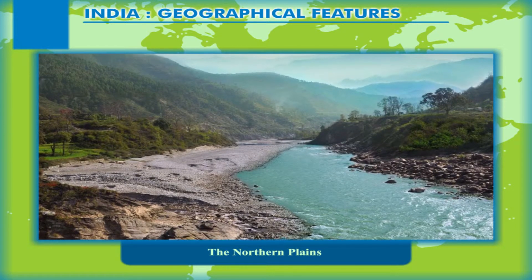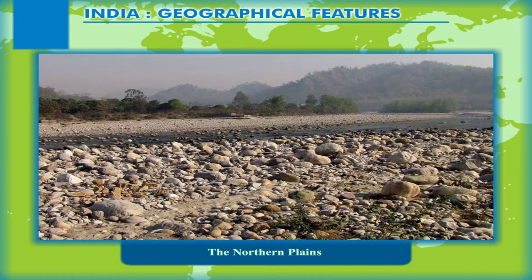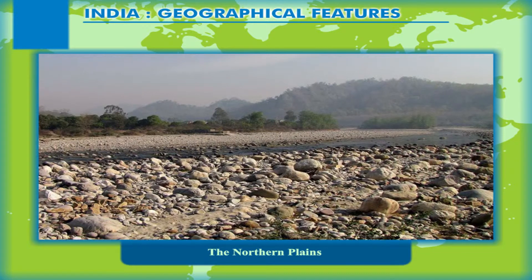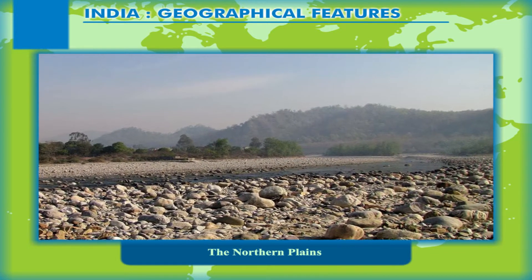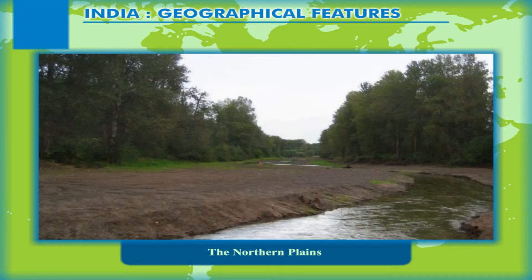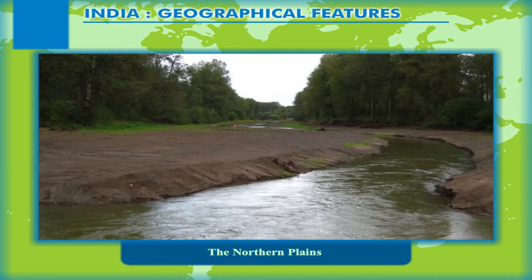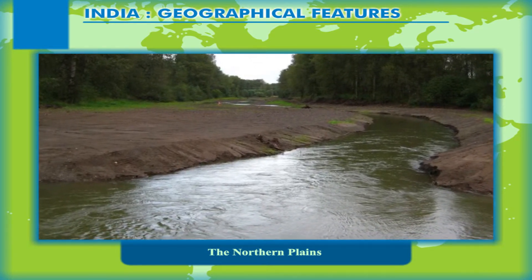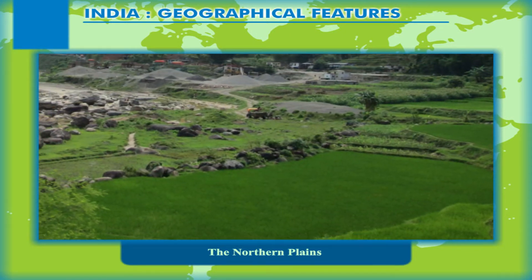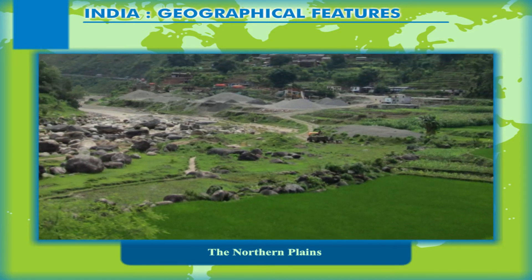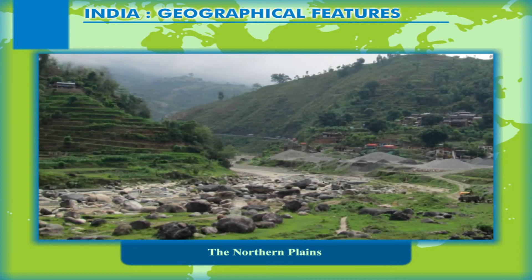The Bhabar: As the rivers descend down the slopes of the northern mountain belt and enter the plain area, they deposit coarse sand and pebbles brought down from the mountains. These deposits of sand and gravel stretch as an almost continuous belt along the foothills of the Shivaliks, from River Indus in the west to Tista in the east, and are known as Bhabar. This belt is so porous that almost all smaller streams sink underground in this area.